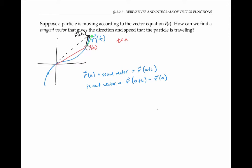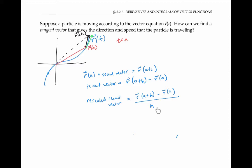Now I could keep taking secant vectors between closer and closer points, and in the limit that would give me a vector pointing in the right direction, but it would shrink down to zero in size. Since I want my limiting vector to have the appropriate direction and length, instead of taking these direct secant vectors, I'm going to use rescaled secant vectors whose length is always the average speed that the particle goes between the two points. To get that rescaled secant vector, I'll take the difference of my two position vectors and divide by the difference in time, which is h. This is very analogous to the calc one calculation of derivatives where we didn't just take the difference in y values on the numerator — we had to rescale it by taking a difference in x values also. Now to get the tangent vector, we just take the limit as h goes to zero of these rescaled secant vectors.